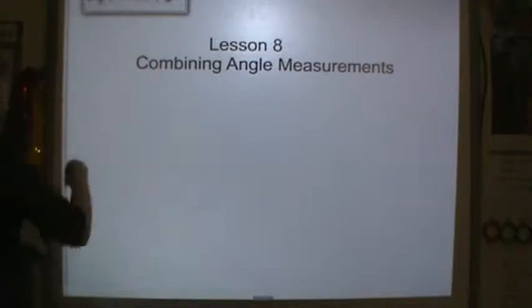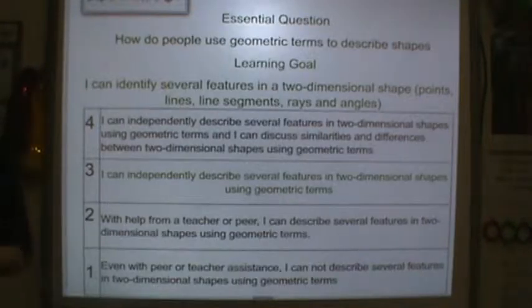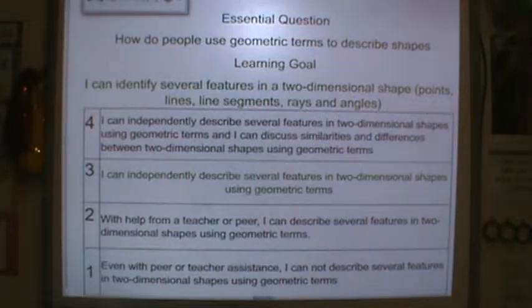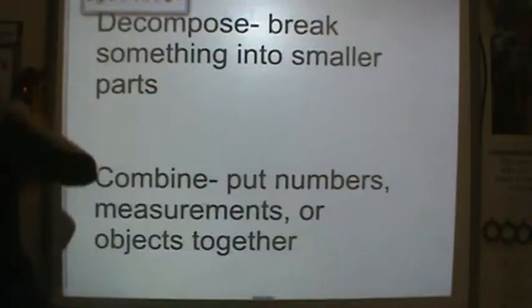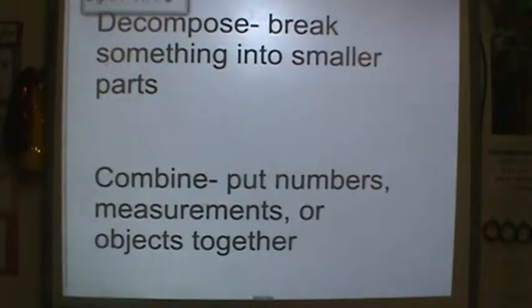We're on Lesson 8, Combining Angle Measurements. Here's your learning goal. Please rate yourself before you move on. And here are two words that I need you to know. Decompose means to break something into smaller parts. Combine means to put numbers, measurements, or objects together. So these two words are antonyms. We're going to be talking about decomposing and composing different angle measures.